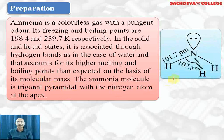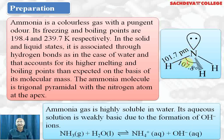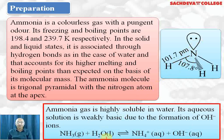The ammonia molecule is trigonal pyramidal with the nitrogen atom at the apex. The bond angle is 107.8°. It has sp³ hybridization and a bond length of 101.7 picometers. There is a lone pair of electrons, and it acts as a nucleophile due to the presence of this lone pair. Ammonia when dissolved in water forms ammonium ions and OH⁻ ions, turning red litmus blue, showing that ammonia is weakly basic in nature.